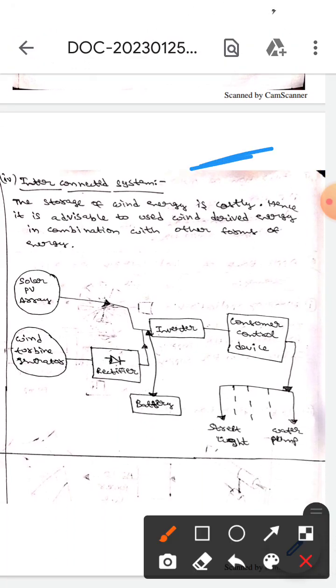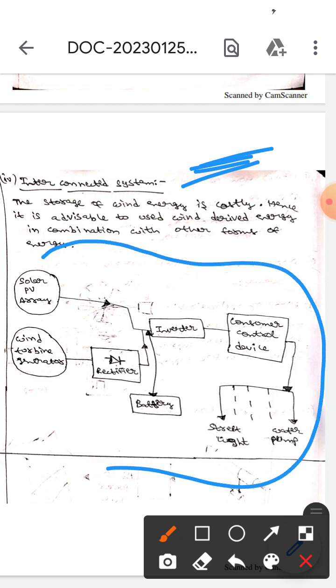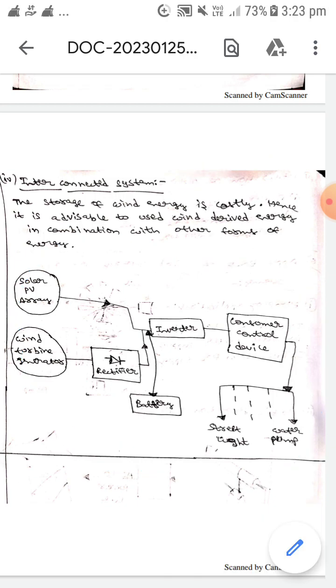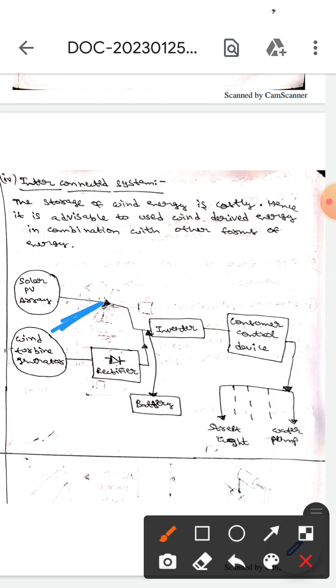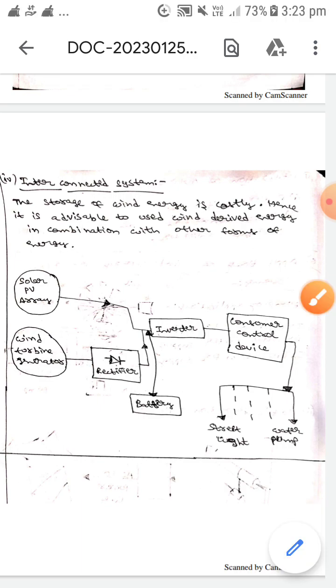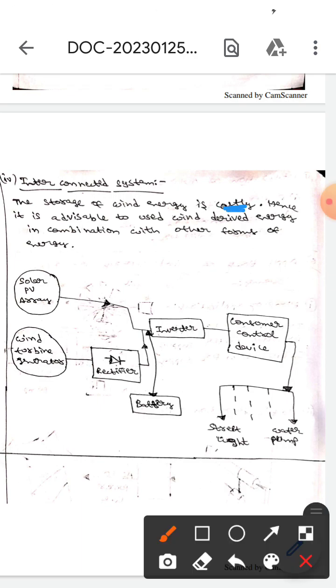The next one is interconnected systems. This diagram represents the interconnected system of solar energy and wind energy. Here the storage of wind energy is costly, so it is advisable to use wind-derived energy in combination with other forms of non-conventional energies.